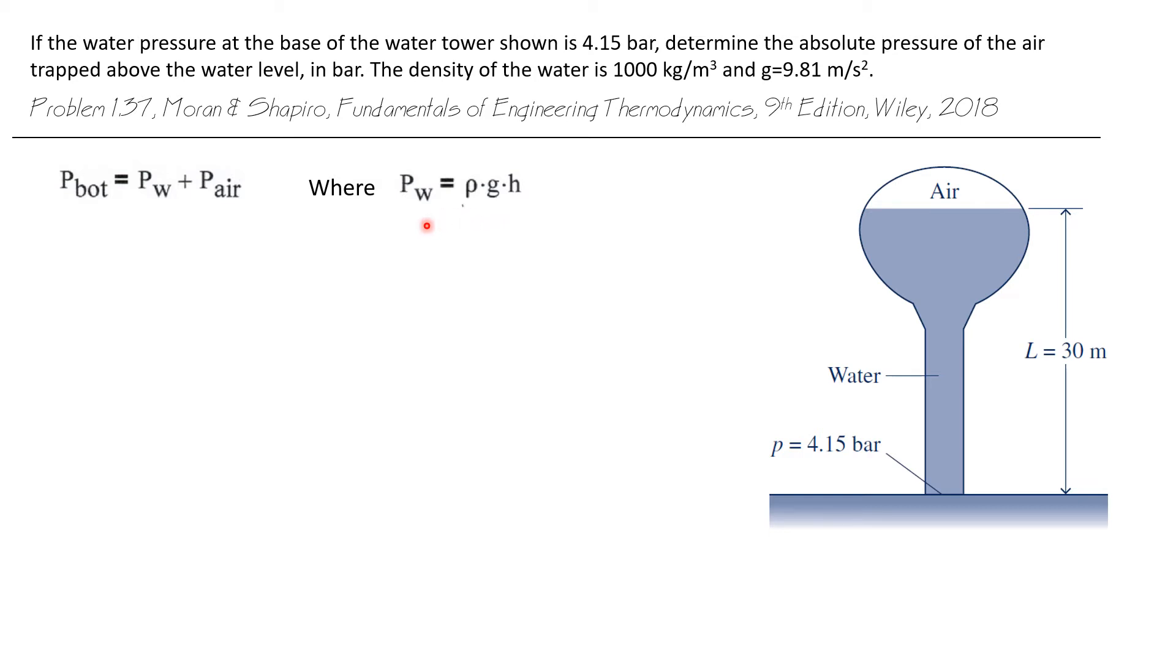We know that a column of fluid creates a pressure designated by rho g h. That's the density times the acceleration of gravity times the height of the column of fluid.